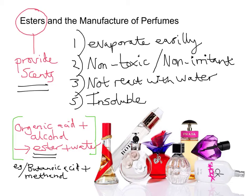Interestingly, to finish off, esters can also be used as solvents. As we know, solvents are liquids that a solute can dissolve in to form a solution. Ethyl ethanoate can be used as nail varnish remover. So we can use this ester — as well as providing a smell in a perfume — as nail varnish remover. Nail varnish is insoluble in water, so water can't remove it. A nail varnish remover is needed, and esters can act as that solvent because things like nail varnish that don't dissolve in water can dissolve in the ester.